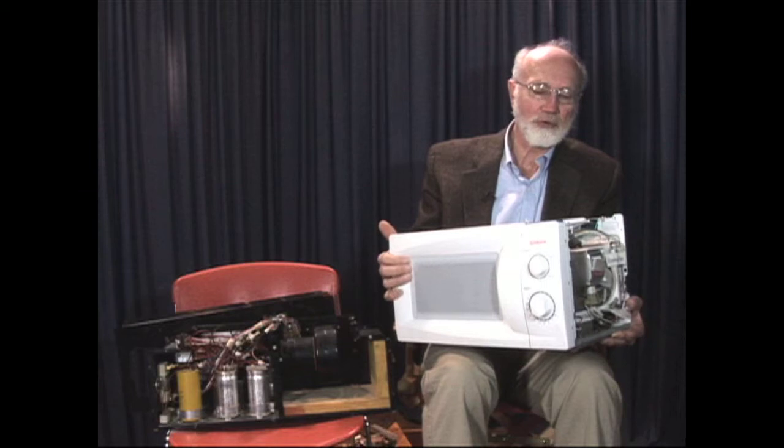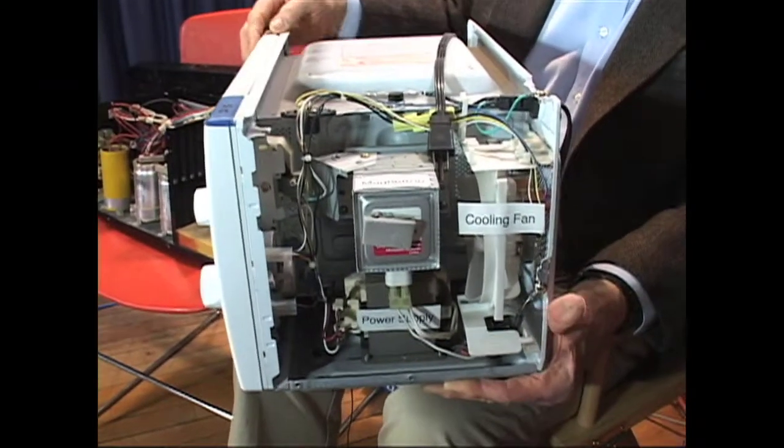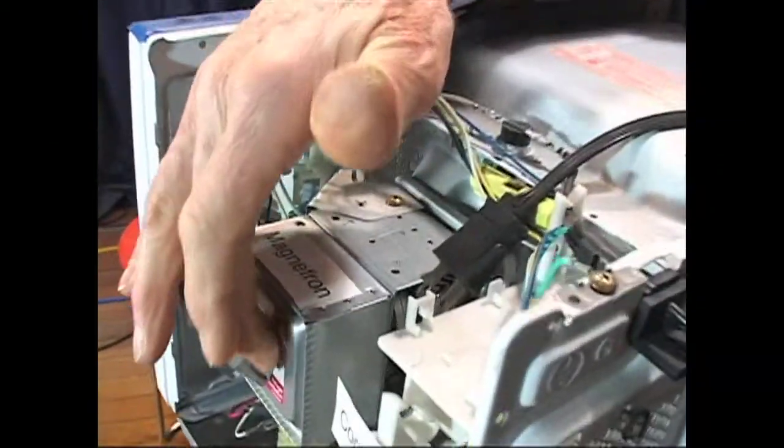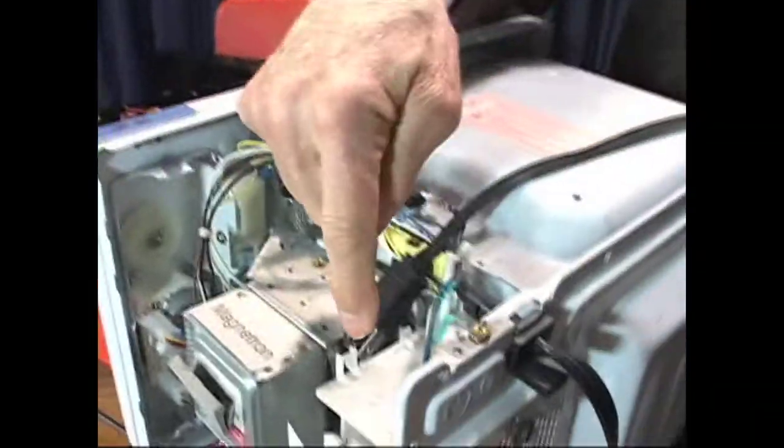So this is a relatively modern tabletop microwave oven, and you can see the magnetron that's here and the magnetron has to be kept cool.